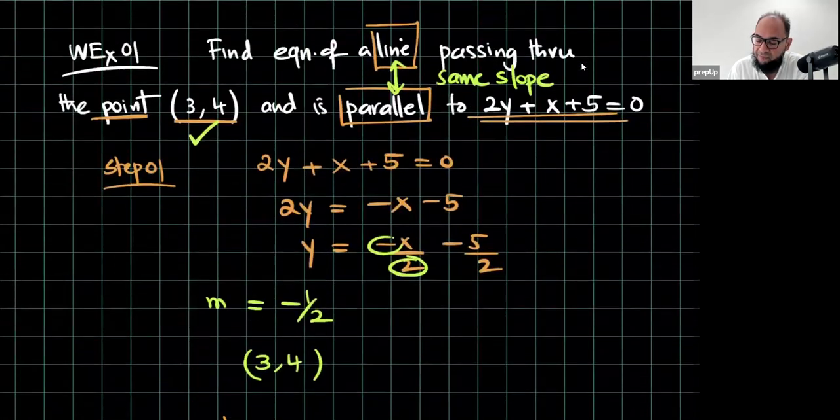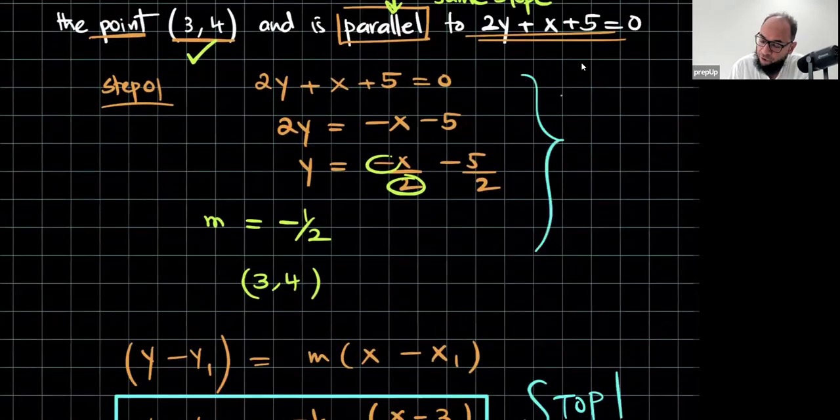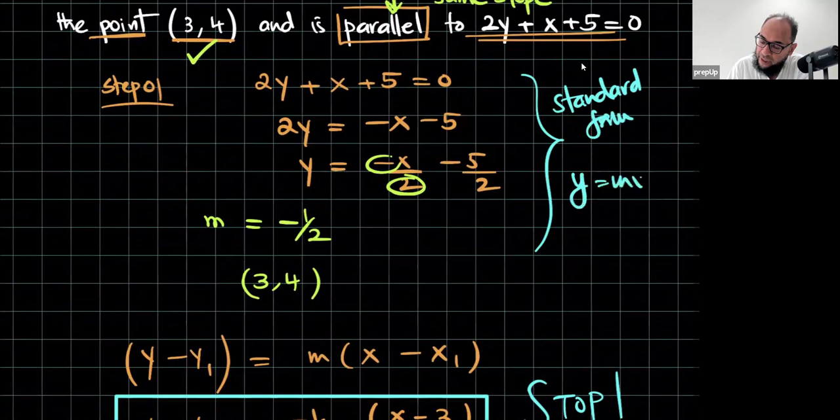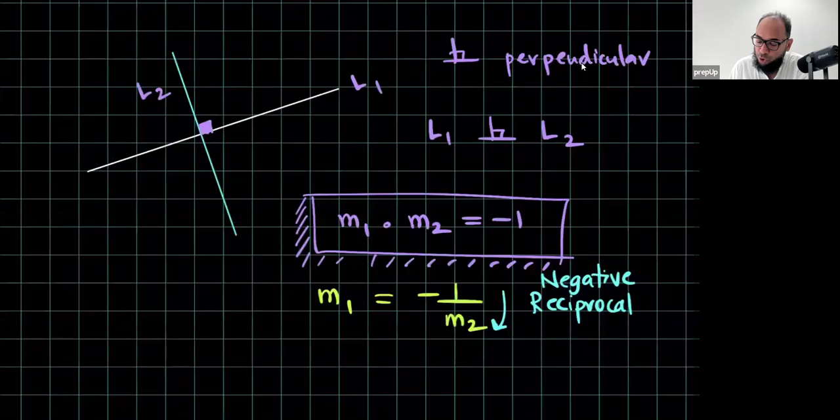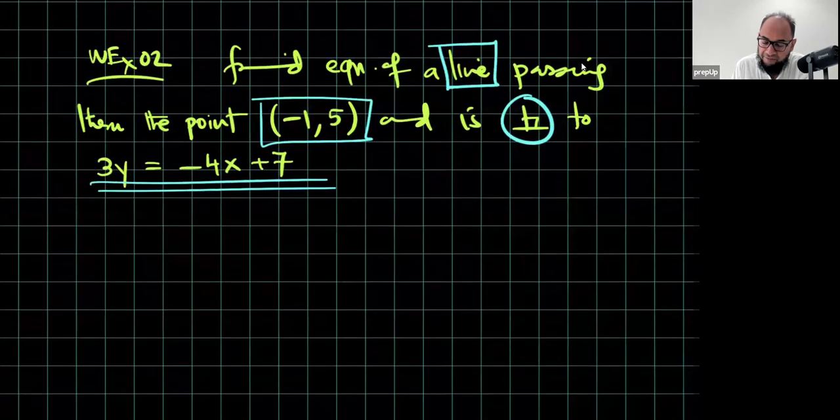Let me just recap it for you. So, step number 1 was getting the line in the standard form and once it's in the standard form which is y = Mx + C, you get hold of M and then step number 2 is finding the equation or writing down the equation. So, using the same knowledge over here, we have the point, we have the equation of a line.